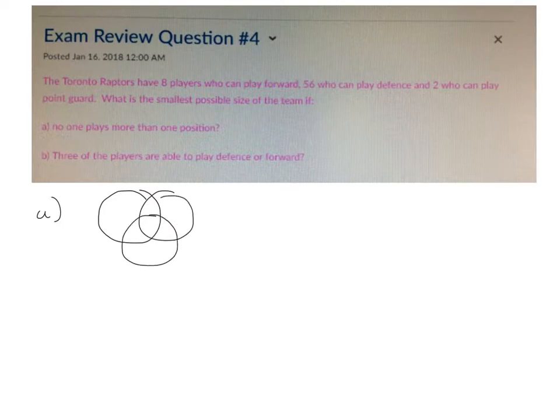and this represents the forwards, this represents the defense, and this represents the point guards, then nobody is in the intersection at all. So we have eight players who can play forward, 56 who are defense only, and two who can play point guard. So the total number of people who must be on the team is 66 players.